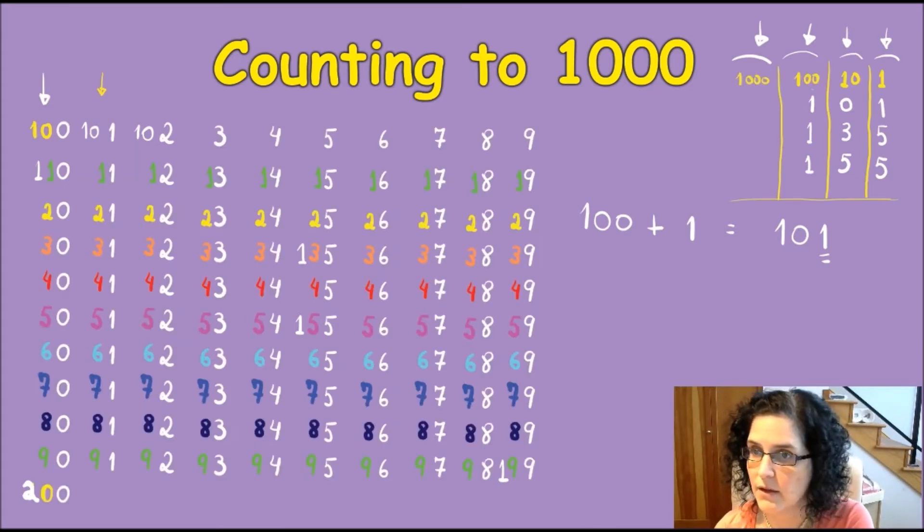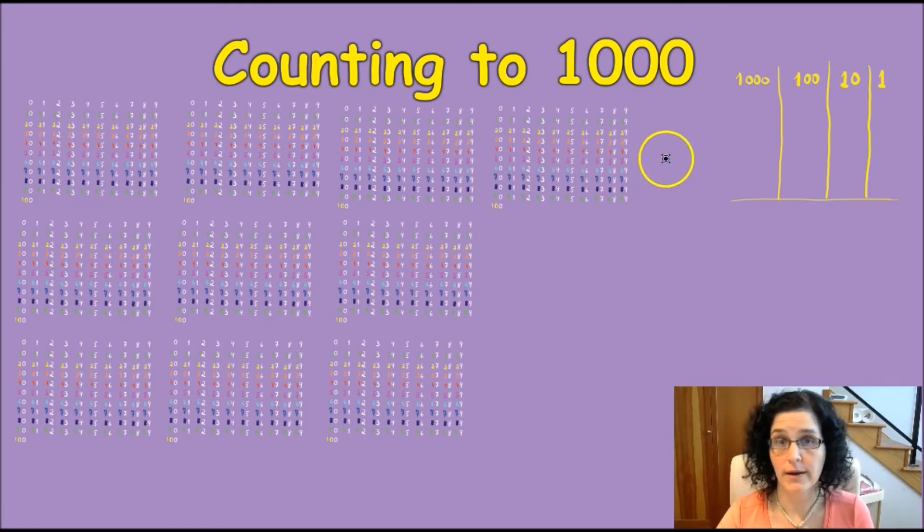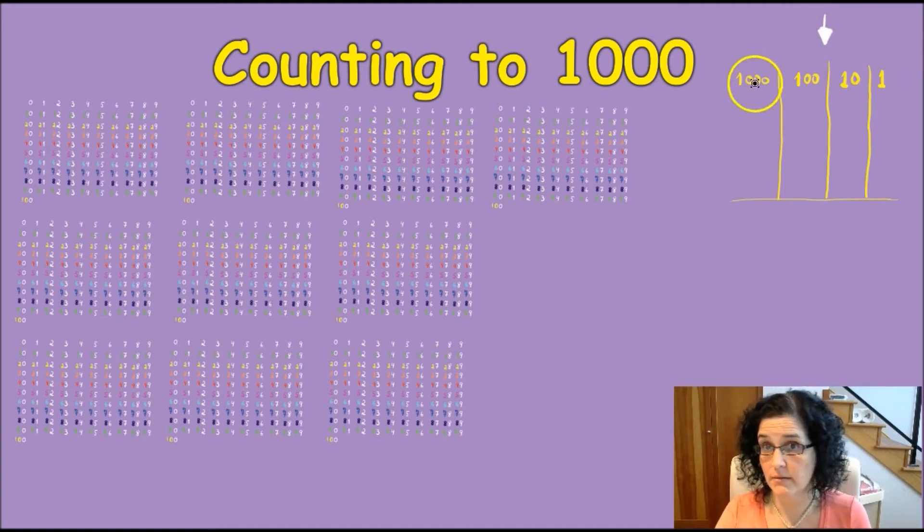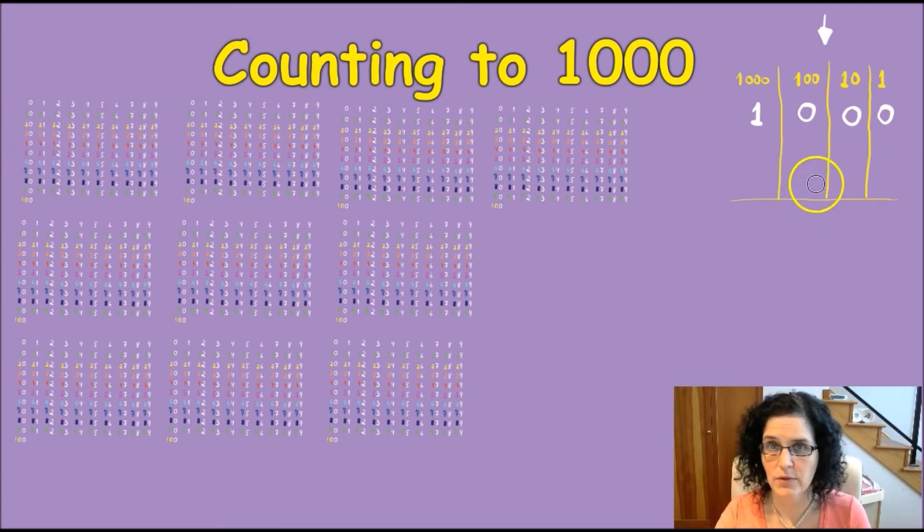So this is what 1,000 looks like. It is 10 groups of 100. If I were to write 1,000 on my little table here, I would have zero, zero, zero. Even though it is 10 groups of 100, because you can never write two digits on the columns. You always write the very last digit, and then you move the next one forward. That's the same with counting to 100.